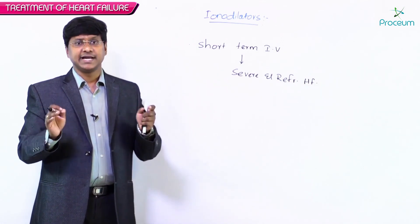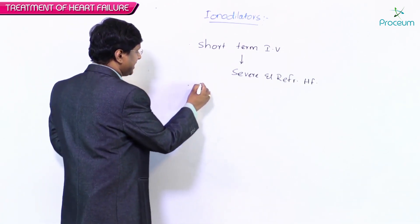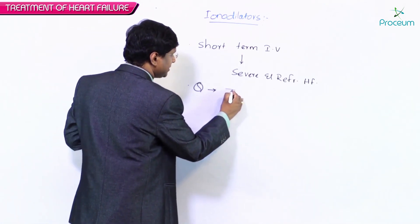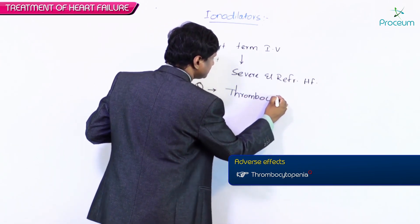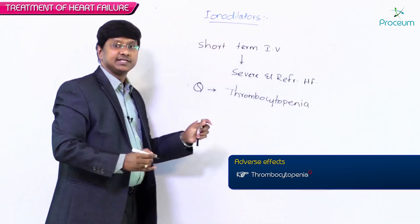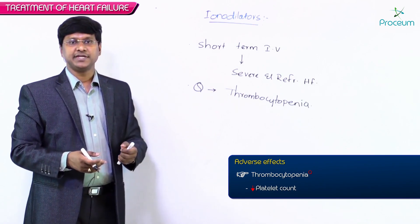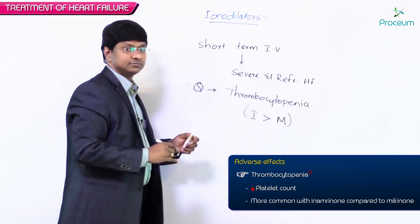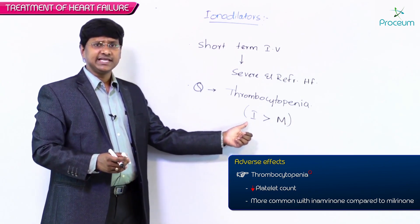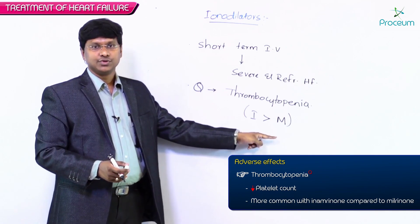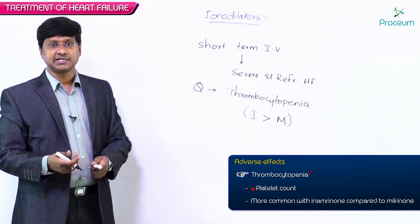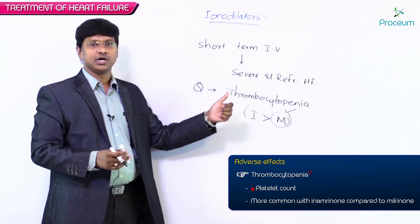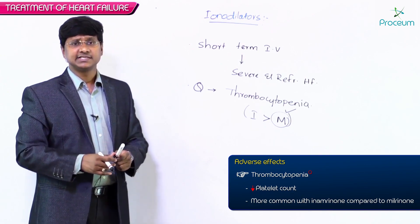The major adverse effect of inodilators — an important MCQ point — is thrombocytopenia, that is a decrease in the platelet count. This thrombocytopenia is more common with inamrinone than milrinone; it is very rare with milrinone. That is why in patients with refractory congestive heart failure, we prefer milrinone rather than inamrinone.